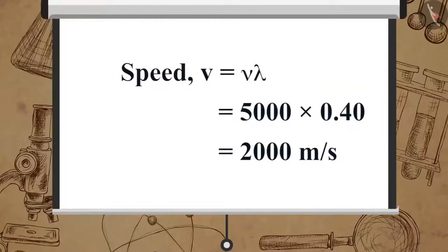Speed V is equal to nu multiplied by lambda, which is equal to 5000 multiplied by 0.40, which is equal to 2000 meters per second.